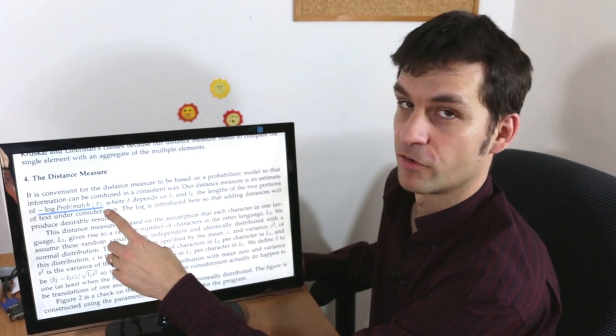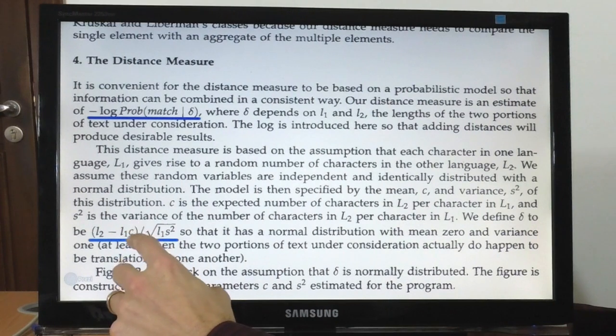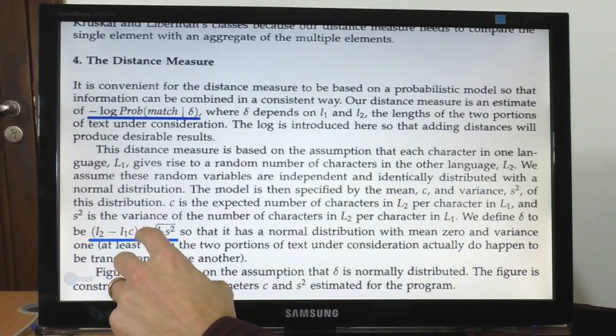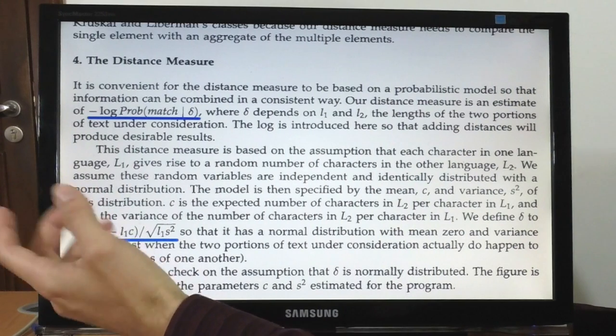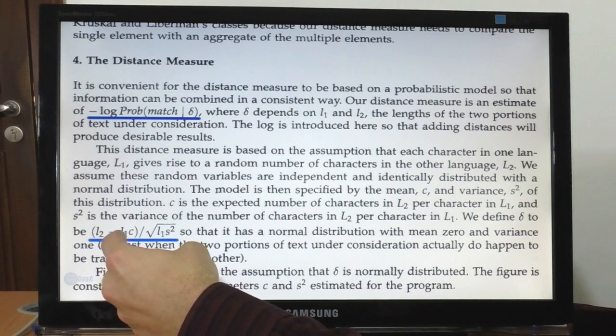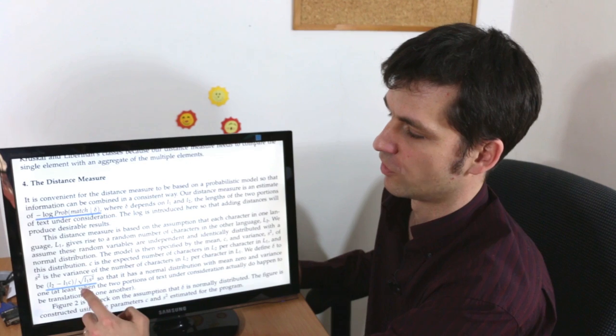This delta, the difference in length, is normalized so that the mean is zero even if one of the languages uses more characters on average than the other for a particular message. And the same type of normalization is used for the variance.